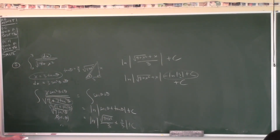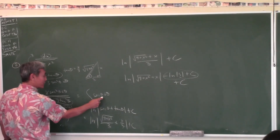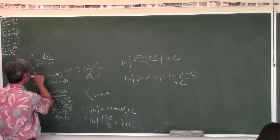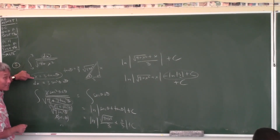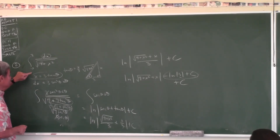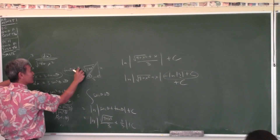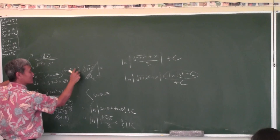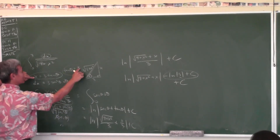For AB calculus, if you got to the integral of sec θ dθ and just wrote the antiderivative with plus C, you're good. But in second semester calculus you'll do all the work. The natural log 3 is a constant and gets absorbed into the plus C.